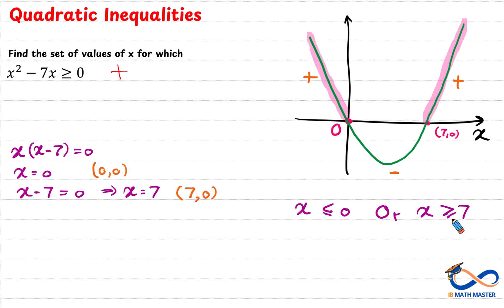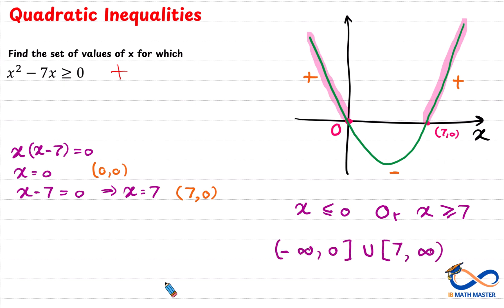If we write the solution in interval notation, it will be from negative infinity to 0, union — which means 'or' — from 7 to infinity.